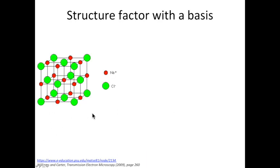Looking at sodium chloride, we have two elements in this unit cell: sodium and chlorine. Sodium and chlorine have different atomic numbers, thus they will have different scattering amplitude. So we denote those as F sodium and F chlorine.